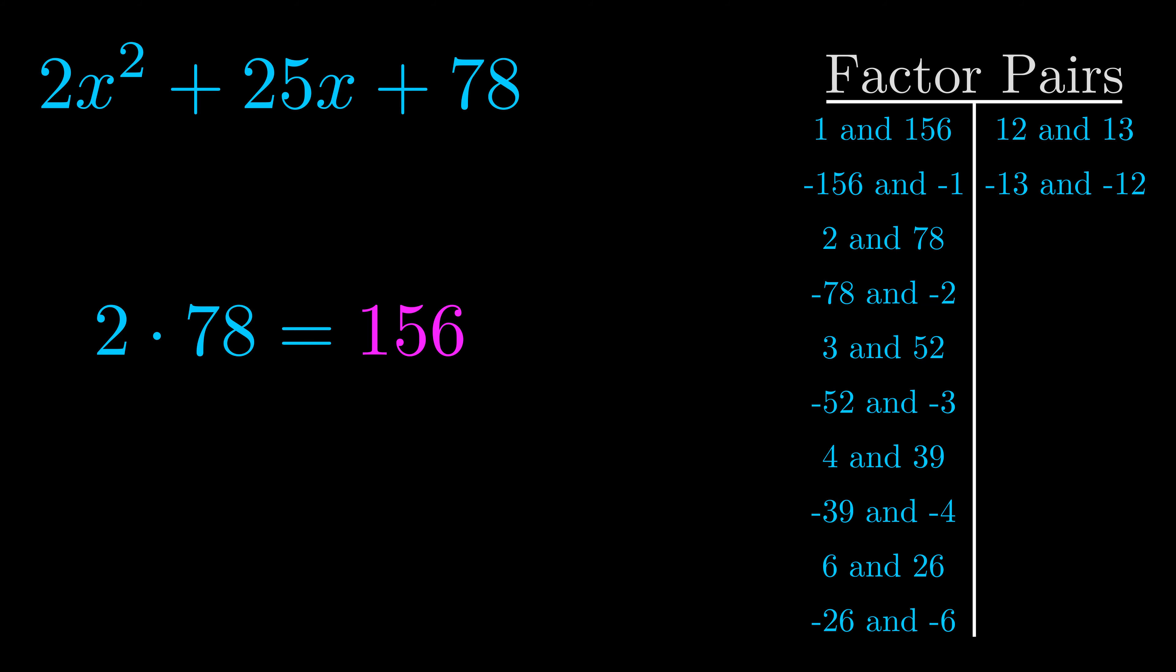Now once you have these factor pairs, the goal is to find which of these pairs adds to the b value. The b value is the coefficient on the x term.